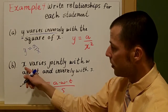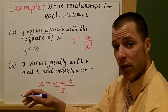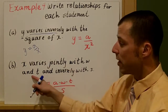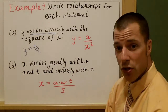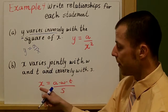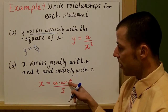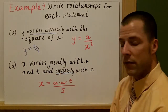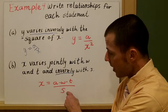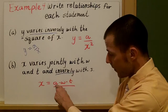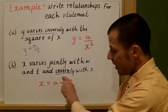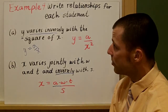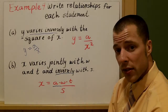In the final example, we're using different variables. x varies jointly with w and t and inversely with s. Varies jointly means multiplication, so we have a times w times t in the numerator. Inversely with s means division by s. So the equation is x equals a times w times t over s. That's section 8.1 on inverse variation and joint variation.